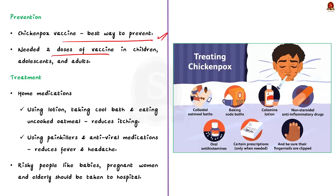Regarding treatment options: taking certain medications at home can help relieve chickenpox symptoms and prevent skin infection. Using lotion, taking cool baths with added baking soda, and eating uncooked oatmeal can help relieve itching. Painkillers and antiviral medication can help relieve headache and fever. These medications are suitable for stable, healthy persons. Vulnerable individuals like pregnant women, babies and elderly people should be taken to the hospital to avoid serious complications.